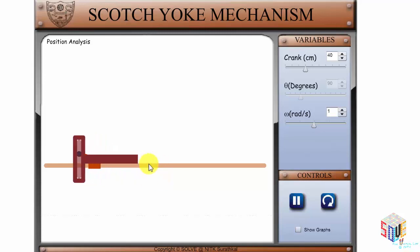As you can see here, this interface mainly consists of three sections: one for the animation, second one for changing the variables, and third one for control. Here, you have an option to see the graph that is plotted dynamically.